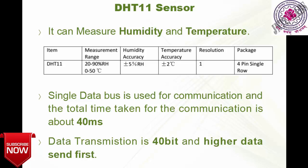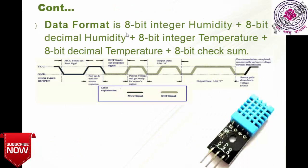The data format is: the first 8 bits are the integer value of humidity, next 8 bits are the decimal value of humidity, then 8 bits for the temperature integer value, 8 bits for the temperature decimal value, and the final 8 bits are the checksum or parity bits. So 8 + 8 + 8 + 8 + 8 equals 40 bits total — satisfied.